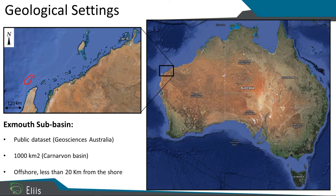The data we are working on is located in the western part of the Australian offshore. It is a public dataset provided by Geoscience Australia. It covers about 1,000 square kilometers in the Carnarvon Basin and is located offshore.